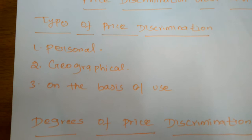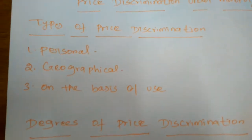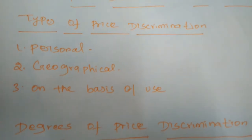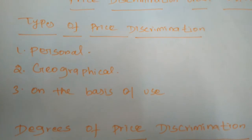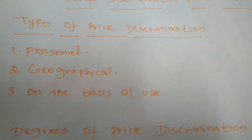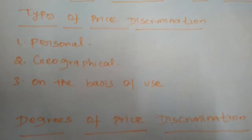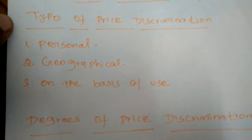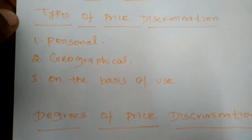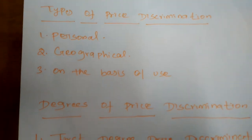Next, on the basis of geographically, different prices are charged at different places for the same product. Some products may have more demand in certain countries, districts, or states. Wherever demand is high, the price will be higher, and where demand is very low, the price may be very low.